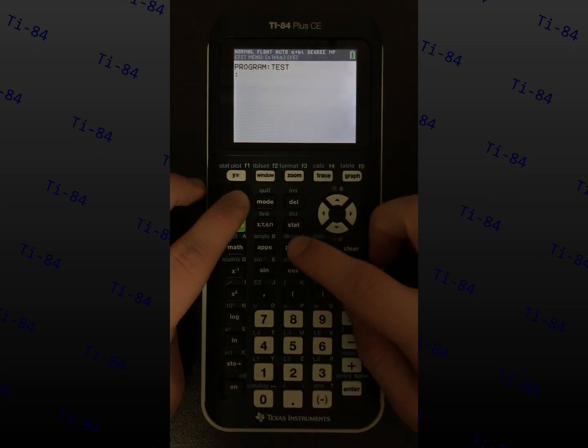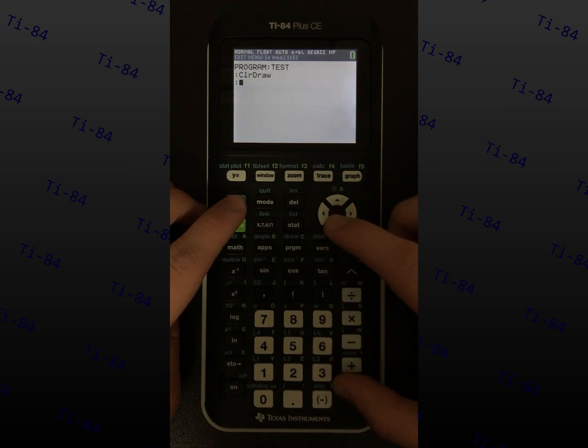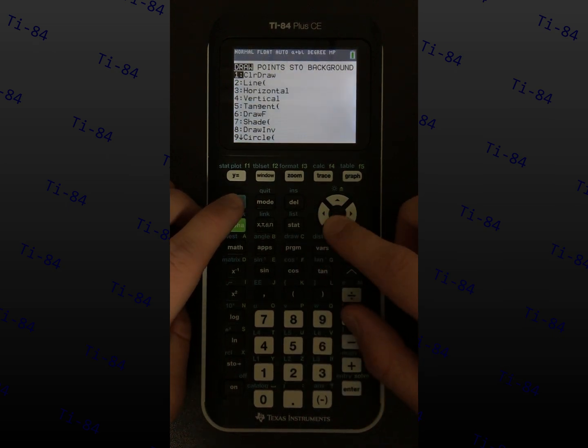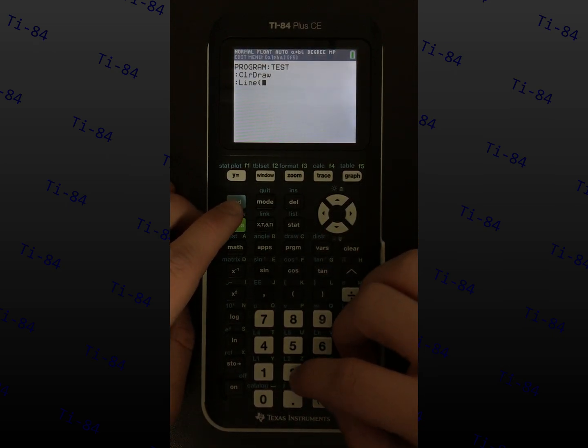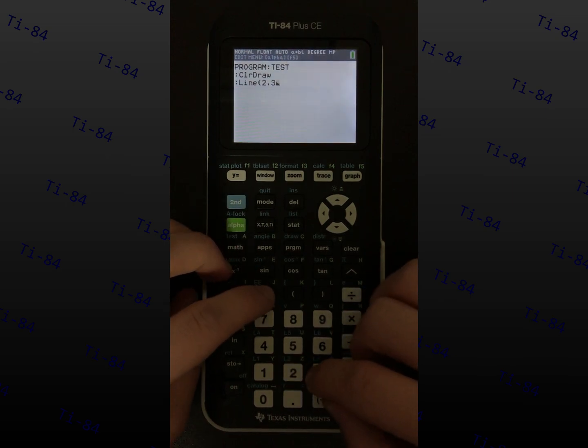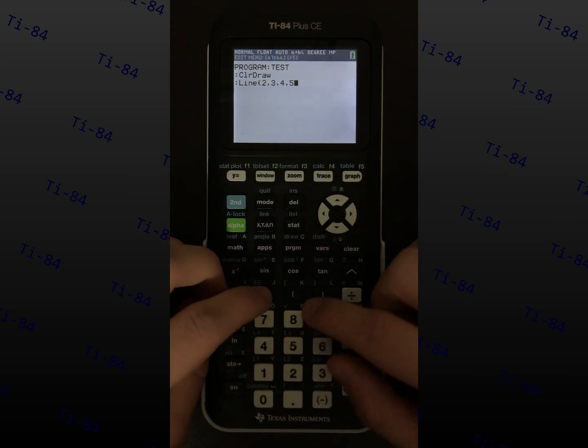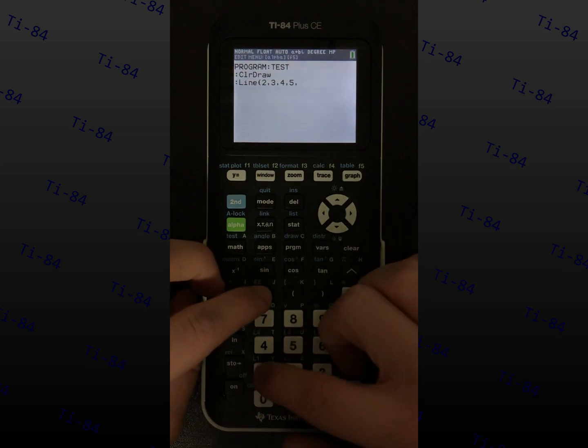Drawing things is a bit more advanced. Type clear draw, line, and enter the starting x and y coordinates, and the final x and y coordinates. Type 1, then enter a color.